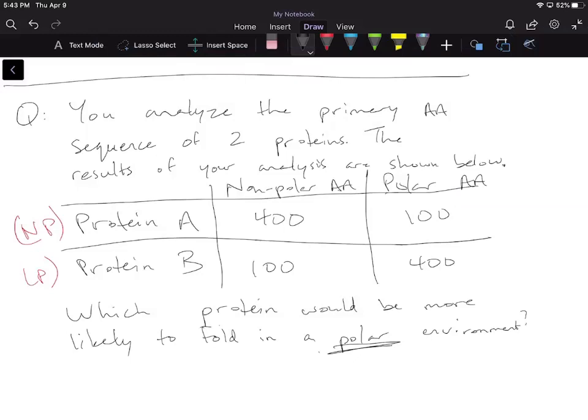Again, we came to the conclusion that protein A, because it has more nonpolar amino acids, it's mostly nonpolar. Protein B has more polar amino acids, so it's mostly polar. Now, the question in this case is, which protein would be more likely to fold in a polar environment?